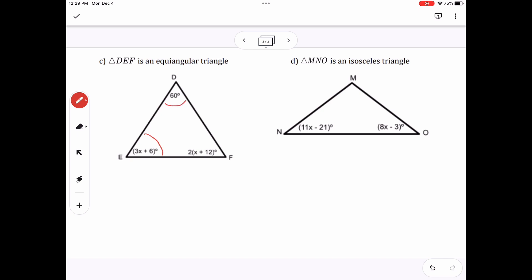On letter C, we have equiangular triangles or equilateral. So all the angles are 60 degrees. So 3x plus 6 is equal to 60. So then I can set those equal to each other. Subtract 6 to get 54. Divide by 3 to give me 18 degrees.